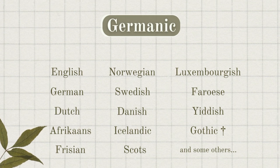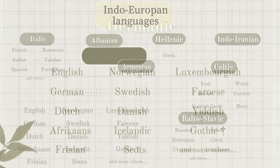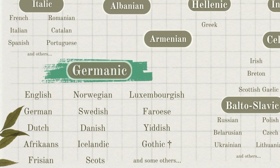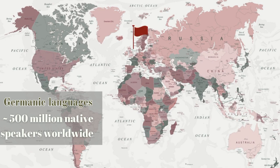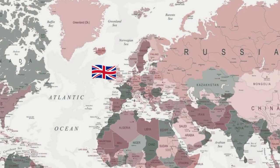Let's start from the very beginning. To understand how Germanic languages have been formed and how they function, let's have a look at their position in the whole language family tree. Germanic languages are in reality only a branch of one of the language families called Indo-European. This language family includes languages such as English, French, Spanish, Russian, and many others. Germanic languages are spoken natively by roughly 500 million people all over the world, predominantly in Europe, North America, and Southern Africa. The most widespread language of this group is English, claimed to be the most widely spoken language in the world.